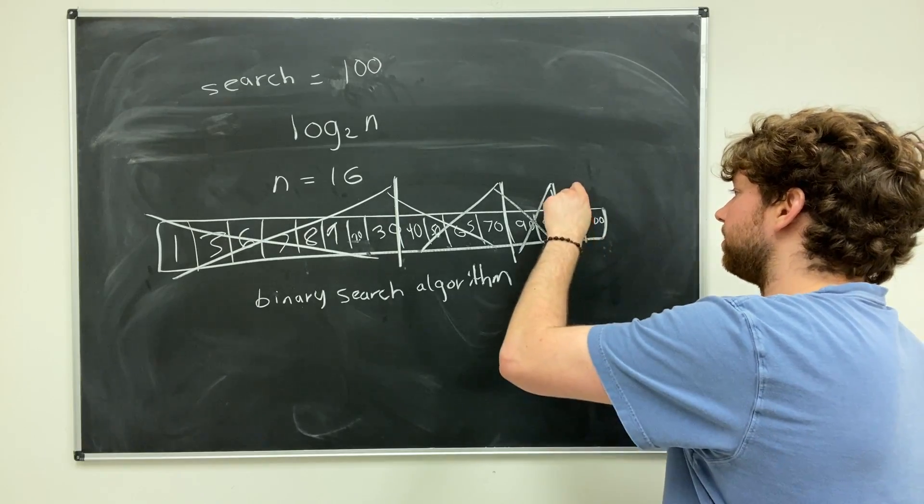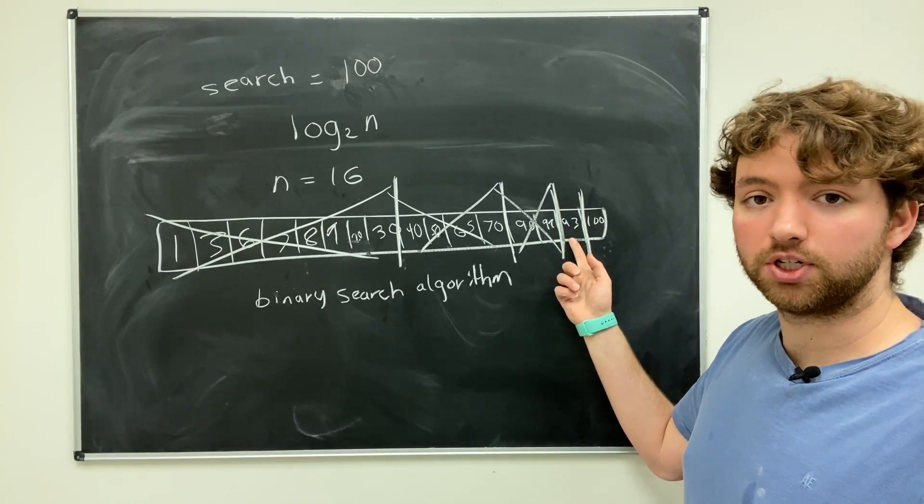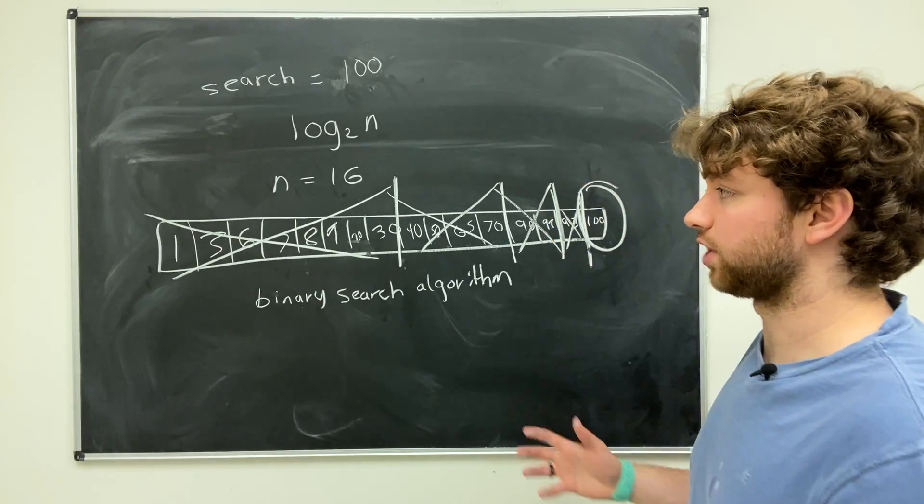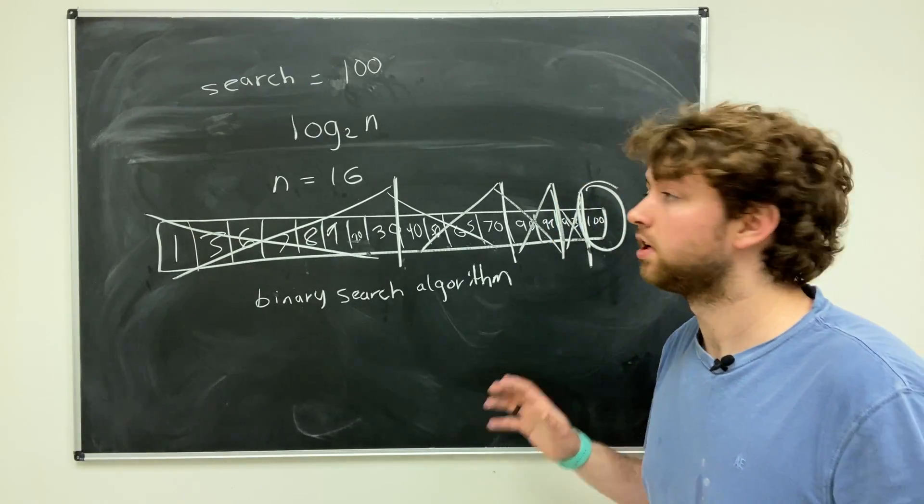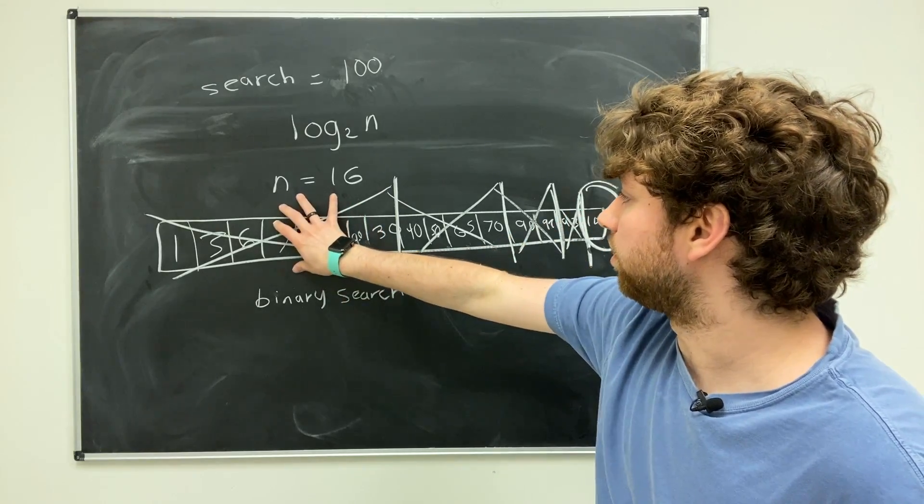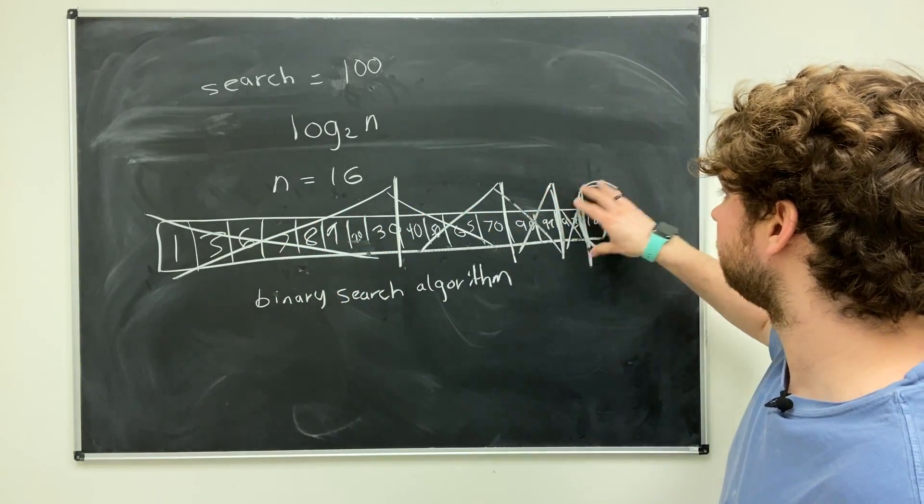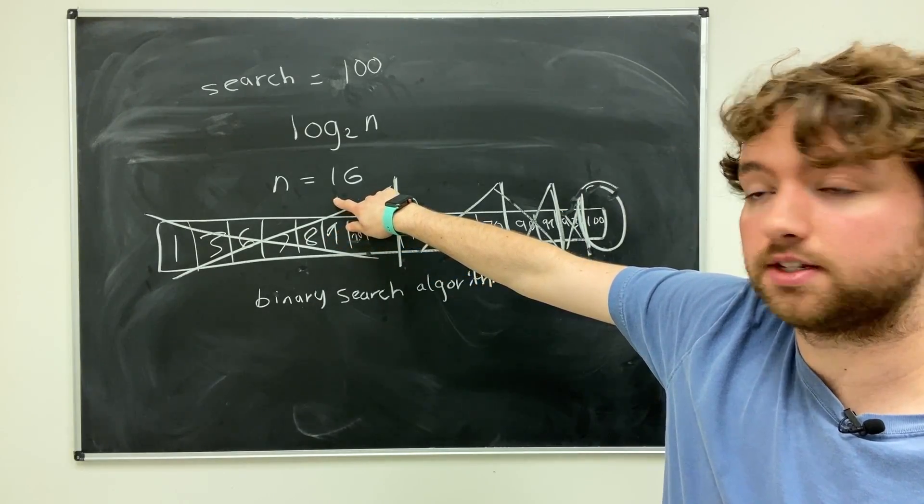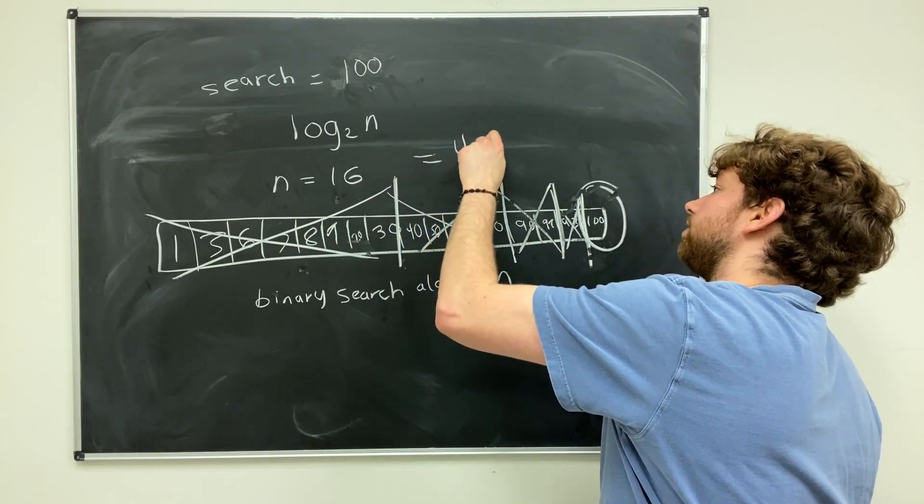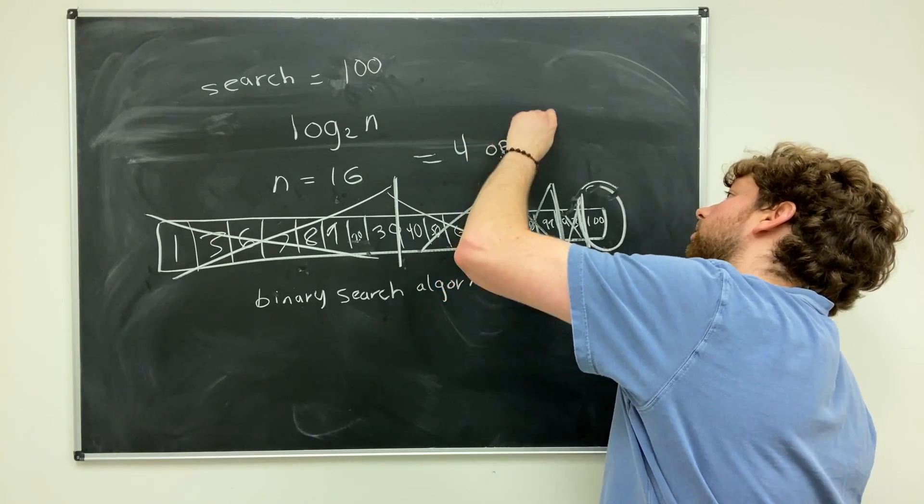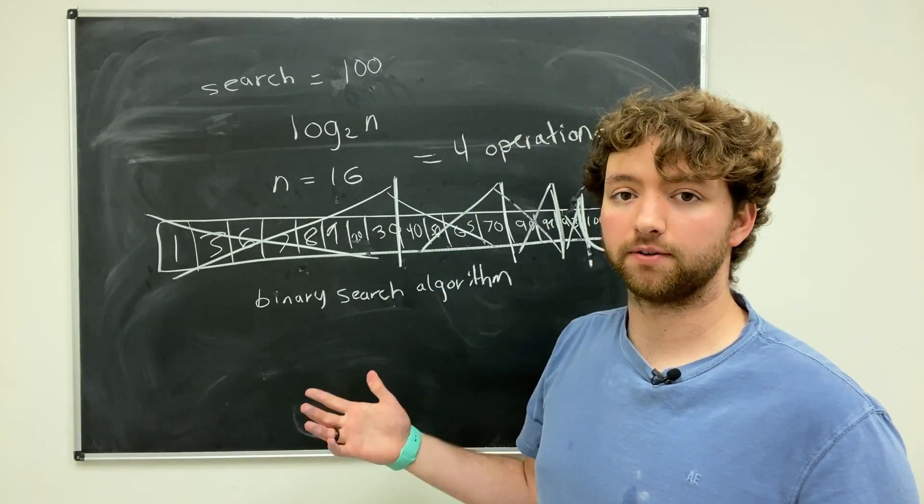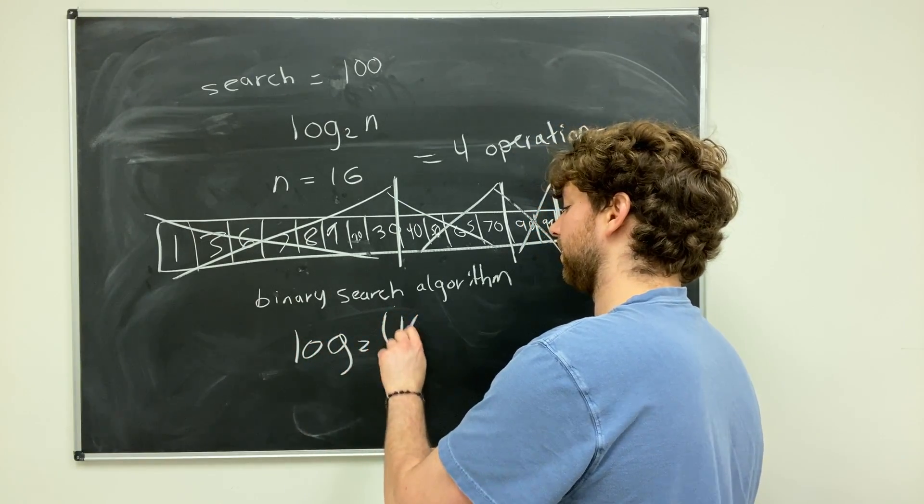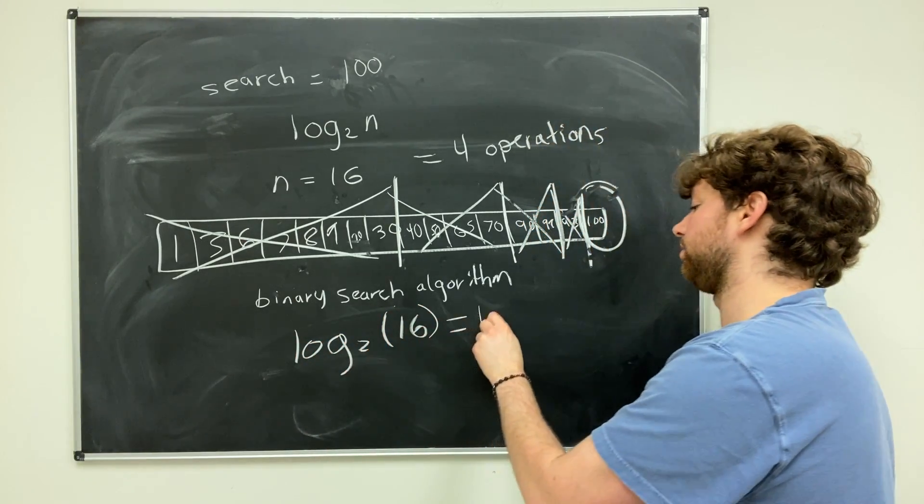Now we got 93 and 100. We split it. Is 93 too low? Yes, it is. So we eliminate it and we are left with the final check, which is the correct one. So if you count this, one operation, two operation, three operation, four operation. So with a n of 16, we only had to do four operations, which this matches perfectly with a logarithm of log 2 of 16. This equals 4.